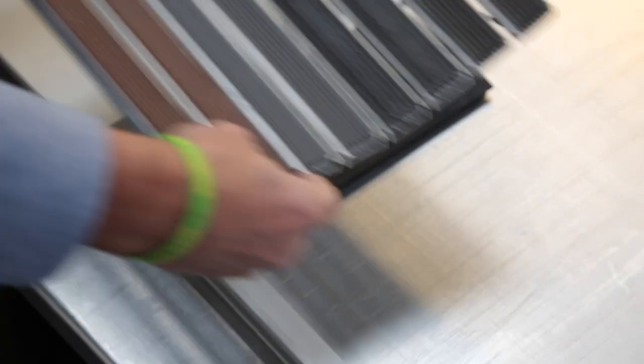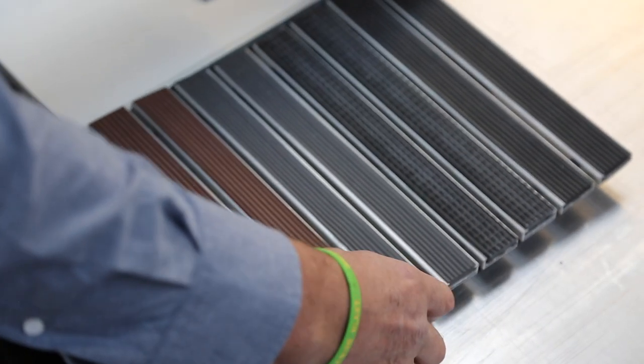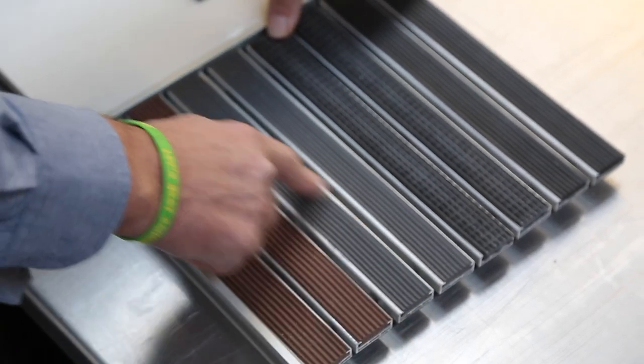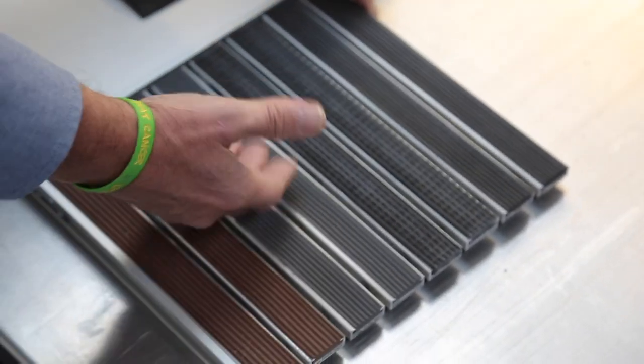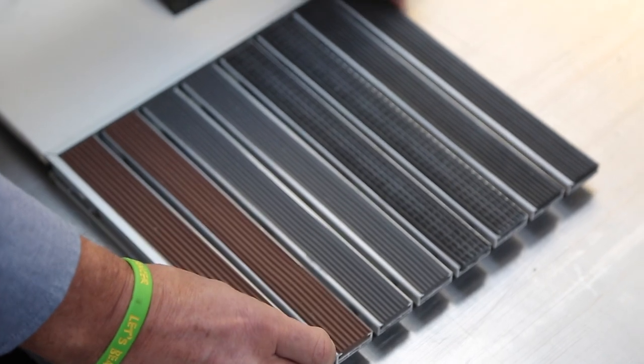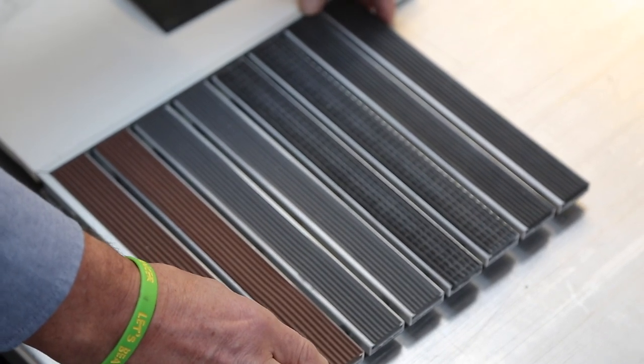This one is what's known as a fall-through system. And as you can see, it has gaps. The dirt falls through there, you lift this up, clean out the dirt, and pop it back. And that stops it being tracked into the existing building.